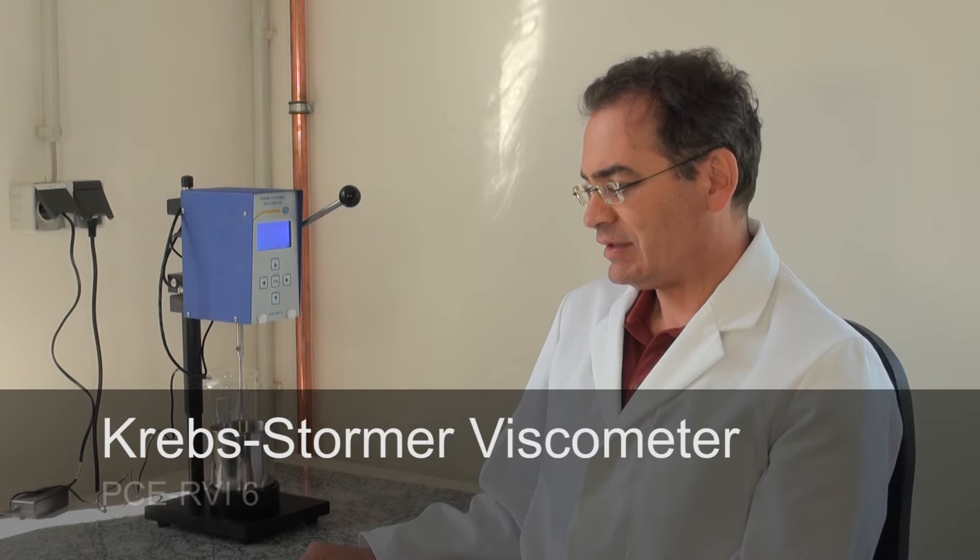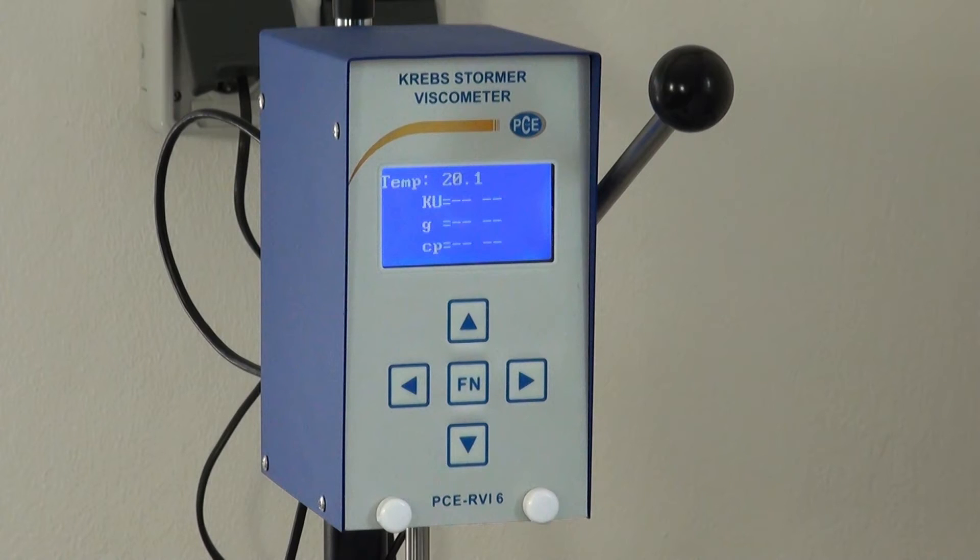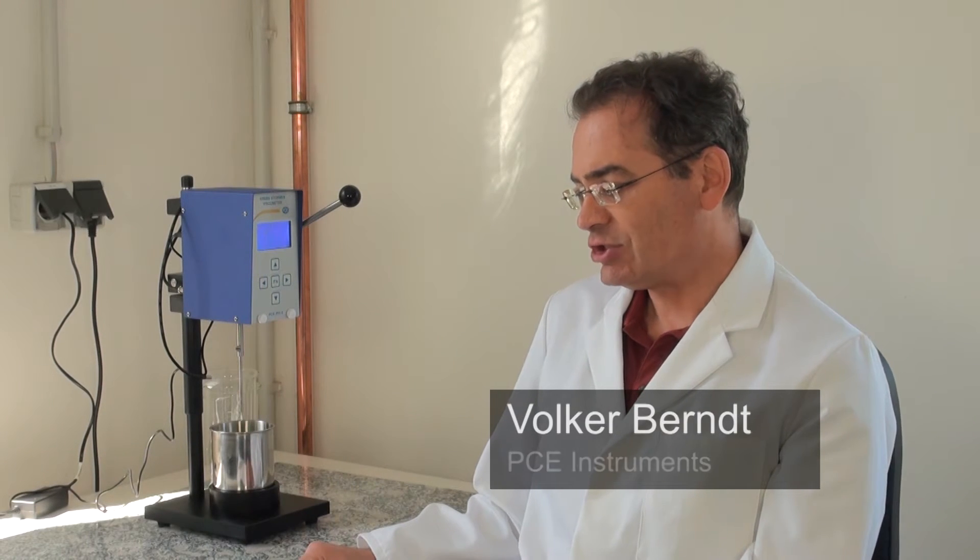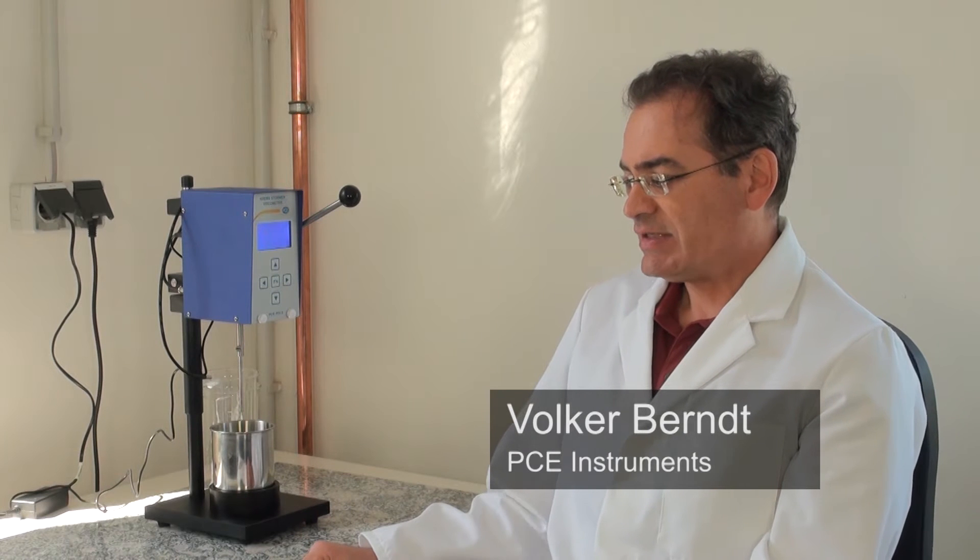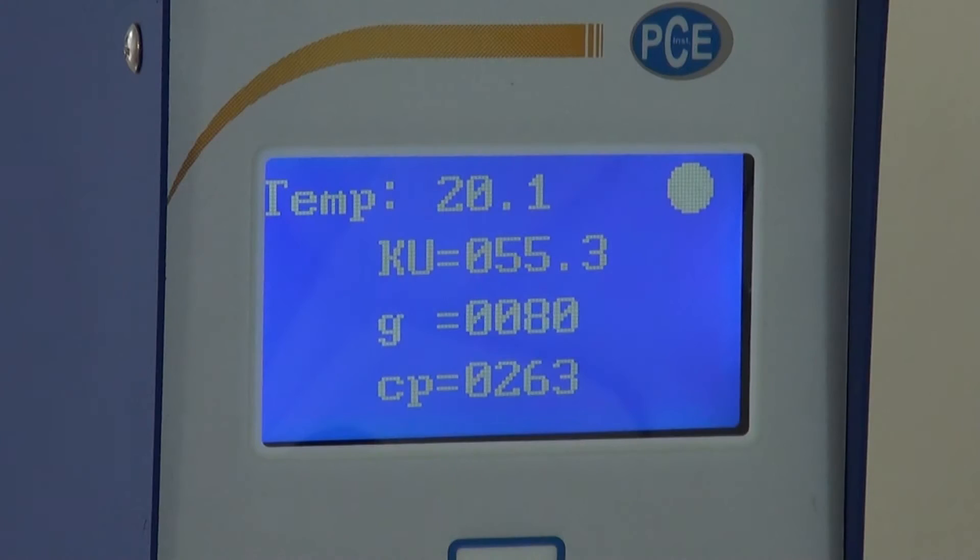This Viscometer works on the principle of Krebs Stormer and corresponds to the guideline of ASTM D563, the standard method for colors and lacquers. The measuring device measures viscosity and gives the units in Krebs units KU and calculates them automatically into Gram and Centipoise.